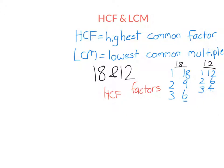Common here means shared — I want to find a number that is a factor of 18 and also a factor of 12, so a number that appears in both lists. Because it's the highest common factor, I want the highest number in both lists. You can see that 1, 2, and 3 appear in both lists, but they're not the highest. The highest number in both lists is 6. So the highest common factor of 18 and 12 is 6 — the highest number that is a factor of both 12 and 18.